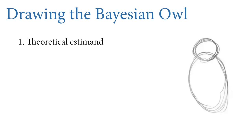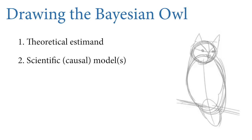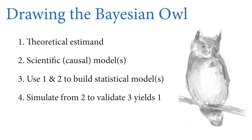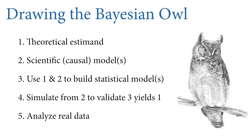The steps of drawing the Bayesian owl are: first, define some theoretical estimand — what are we trying to do in this study? Second, use that to design a scientific causal model, starting as a DAG but eventually becoming generative. Third, build a series of statistical models which address the specific estimands and can be justified by the causal models. Fourth, simulate from the generative model to validate that the estimator works. Fifth, analyze the real data. There may be additional steps — we might loop back and revise the causal models — but as long as we document all of that, this is the workflow we want.